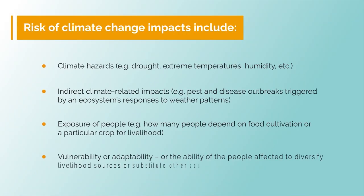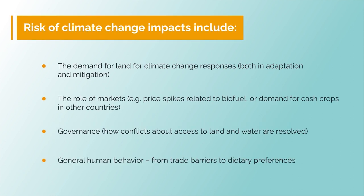In the context of the impacts of climate change, climate-related risks include pests, weeds and diseases, as well as the disruptions of pollinator ecosystems triggered by the ecosystem's response to weather patterns. Drivers of risks include climate hazards such as drought, extreme temperatures, flood and humidity; indirect climate-related impacts including pest and disease outbreaks; exposure of people such as those who depend on food cultivation or a particular crop for livelihood; and vulnerability or the ability of people affected to diversify livelihood sources or substitute other sources of food. In the context of responses to climate change, drivers of risk may include demand for land, role of markets such as price spikes related to biofuel, governance including conflicts about access to land and water, and general human behavior from trade barriers to dietary preferences.